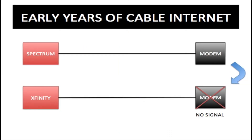In the early years of the internet, cable internet providers all had different standards, so you just couldn't go out and buy a cable modem. If you were with Spectrum you had to buy or lease a modem from Spectrum, and if you were with Xfinity you had to buy or lease a modem from Xfinity. So if you were with Spectrum and wanted to move to Xfinity, you couldn't take that modem with you — it wouldn't work. This was very frustrating to many customers and it wasn't exactly great for business.